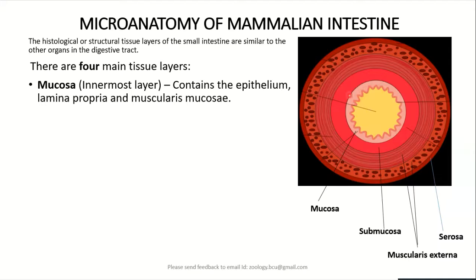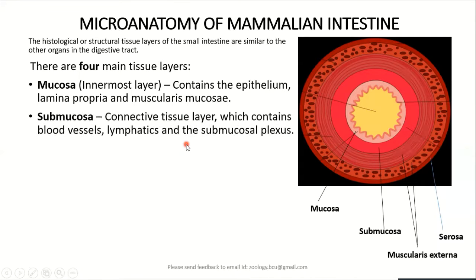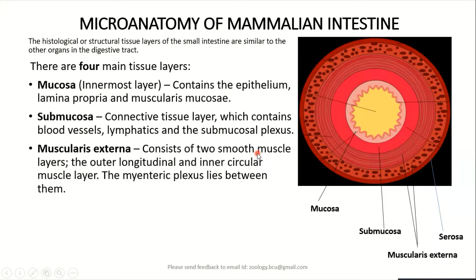The mucosal layer in turn consists of mucosal epithelium, underneath which we have lamina propria, followed by muscularis mucosa. Apart from mucosa, the wall of the intestine also has a submucosa, which is a connective tissue layer containing blood vessels, lymphatic vessels, and the nerve plexus called the submucosal plexus. Below the submucosa is the muscularis externa, which consists of two layers of smooth muscles — outer longitudinal and inner circular muscles — with the myenteric plexus in between.